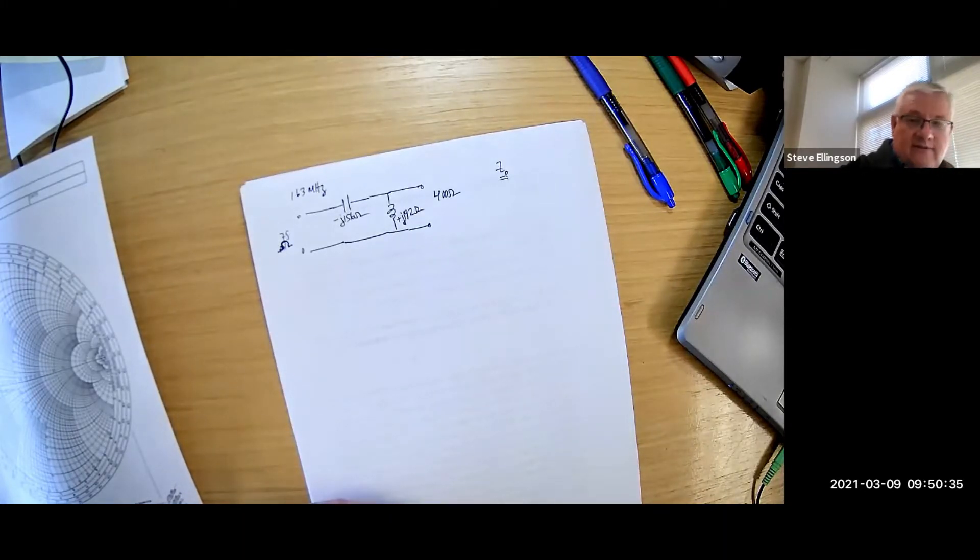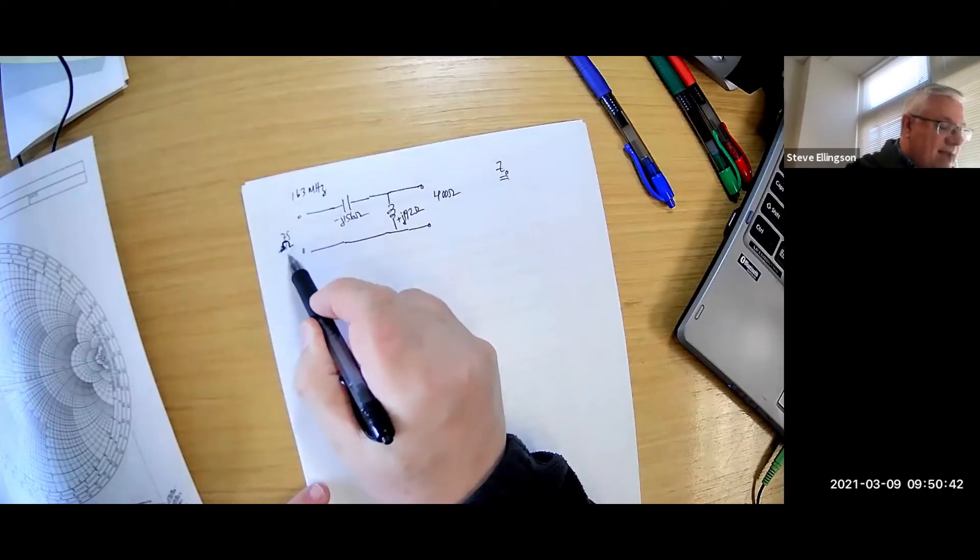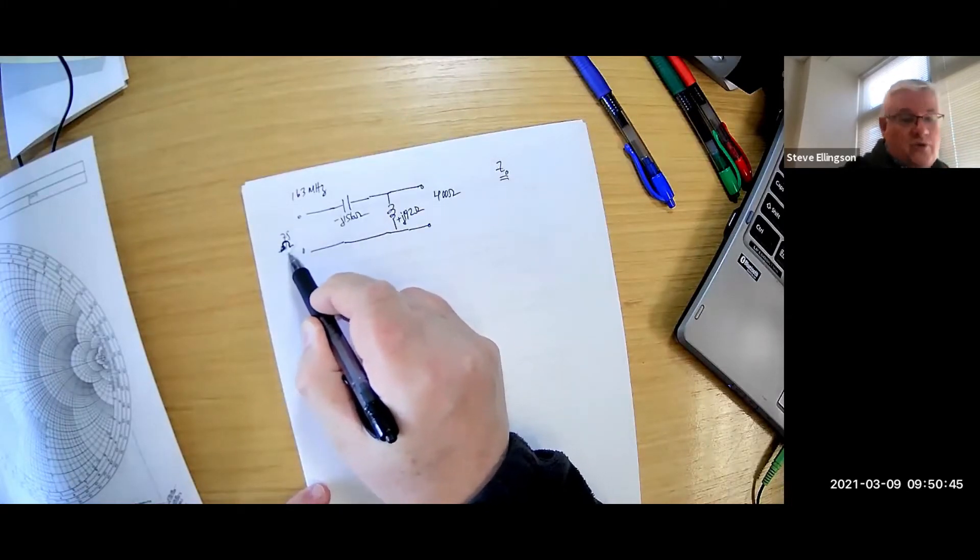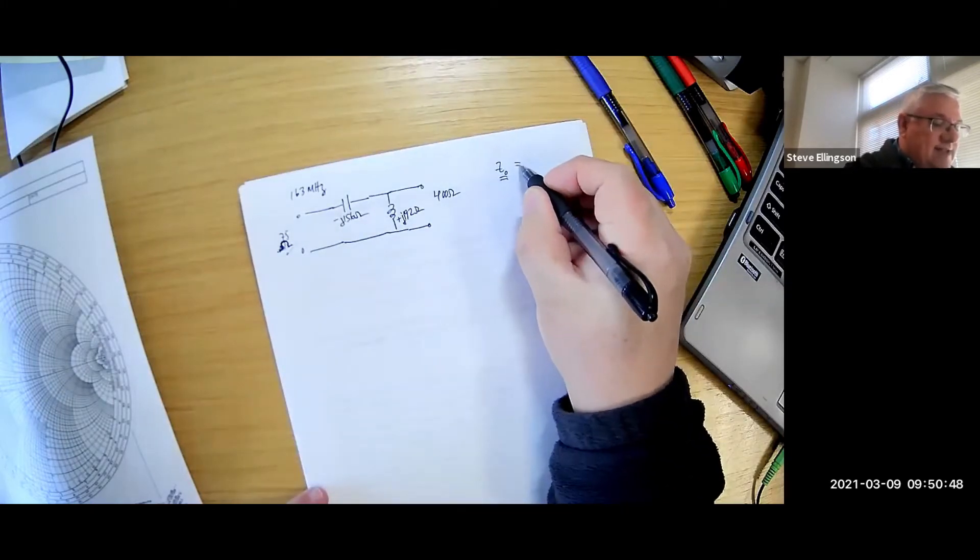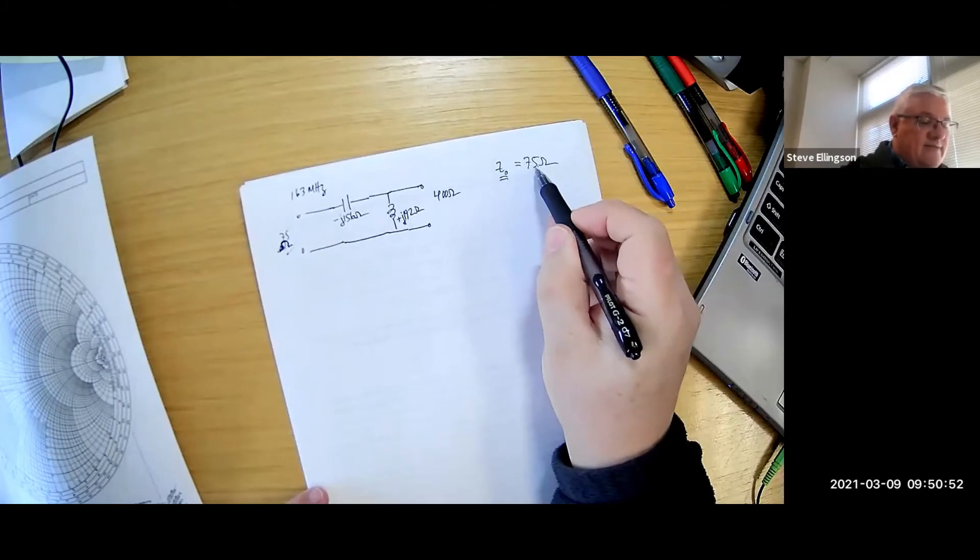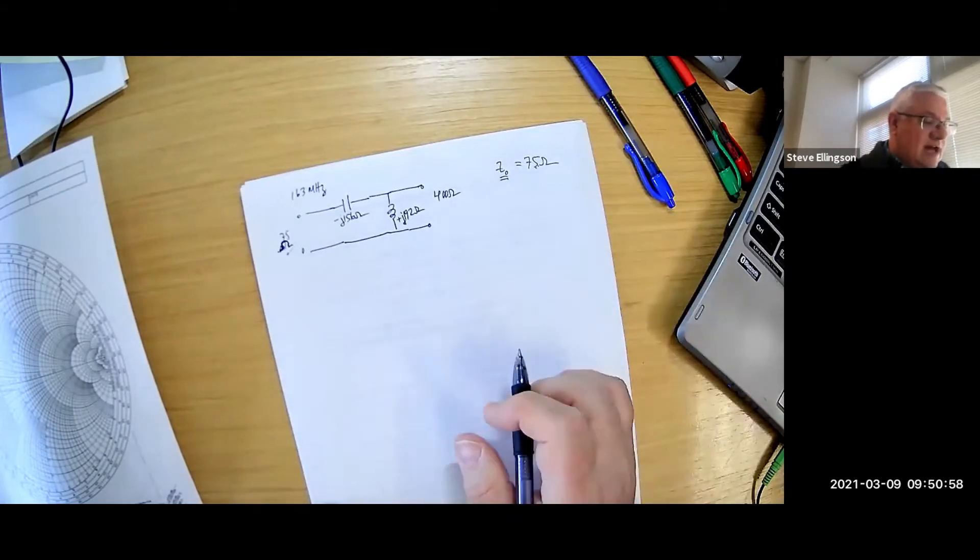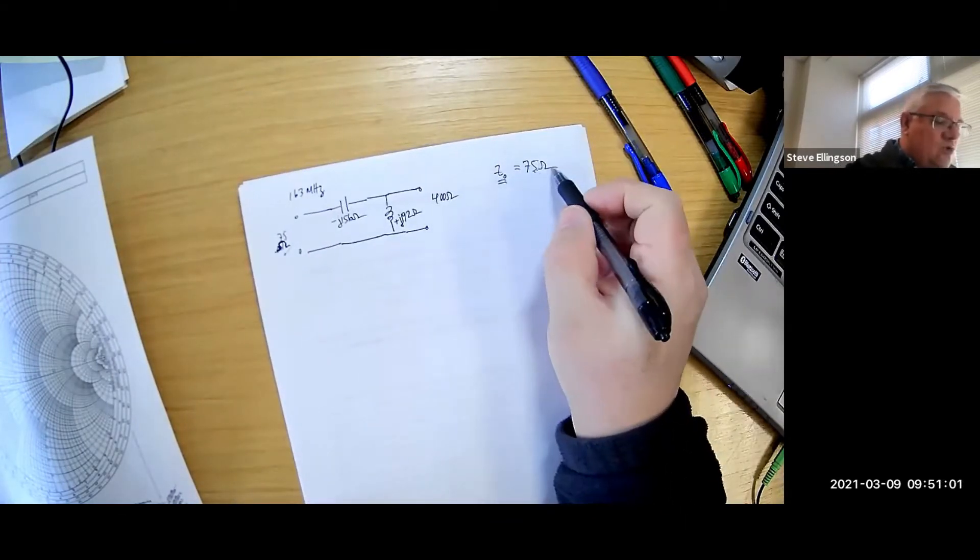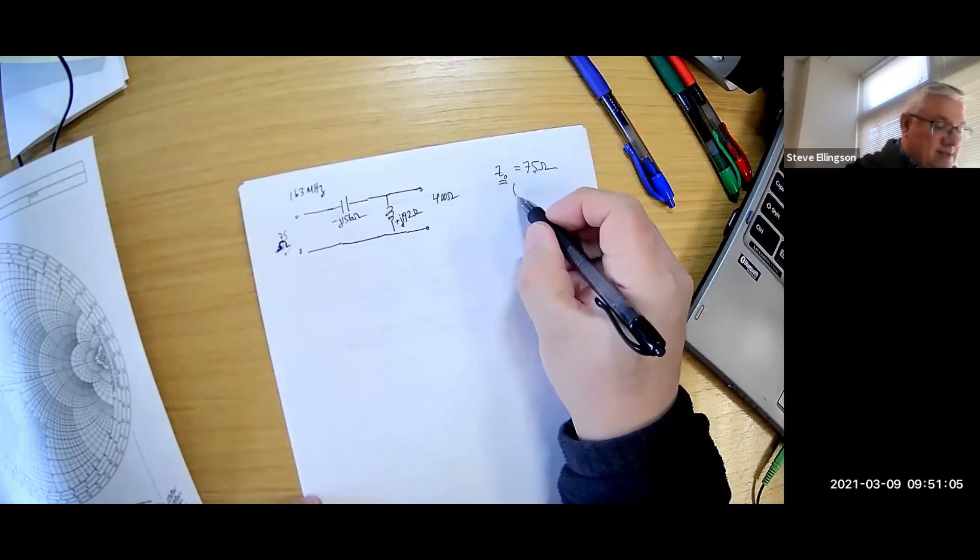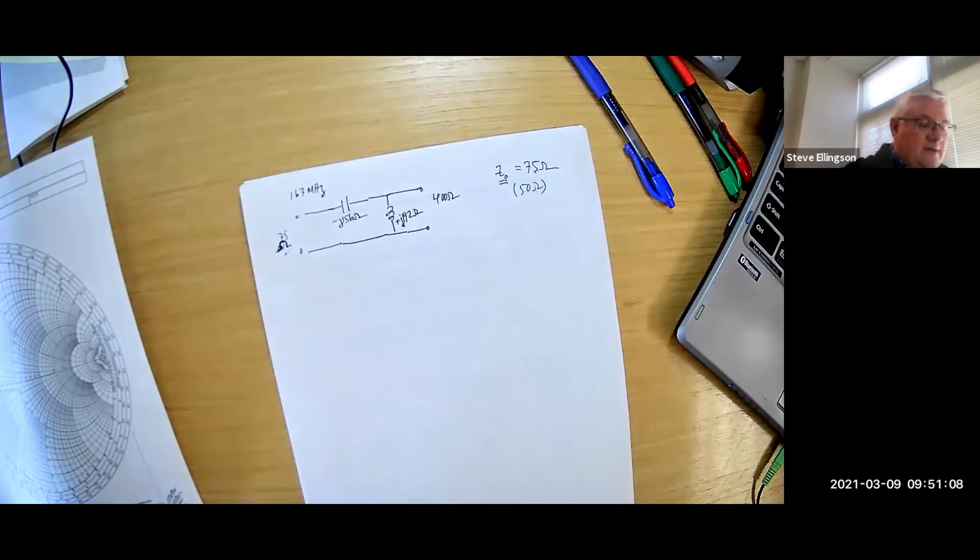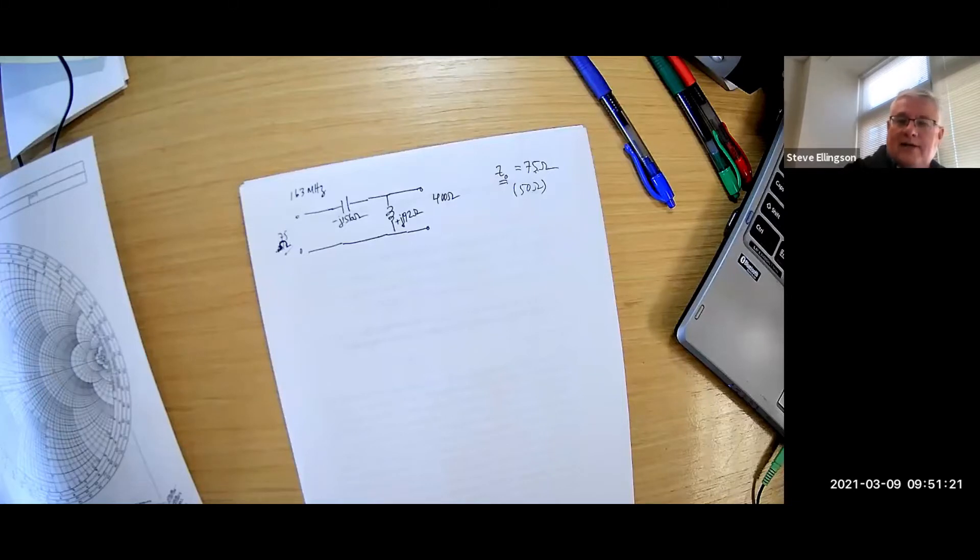Well, any value will work, including by the way complex impedances, but normally if you're doing a matching problem you're matching to some value and that value you're trying to match to would be the one that you'd select for z naught. If I select z naught to be 75 ohms then I know that 75 ohms corresponds to the center of the Smith chart and that will allow me to use all the convenient features of Smith chart. Normally you choose 75 ohms here.